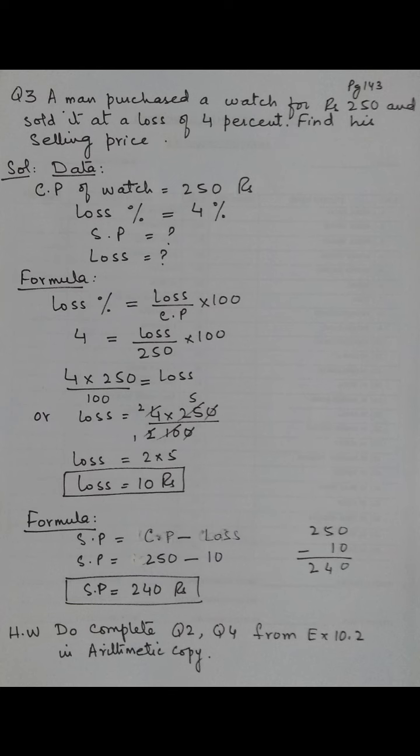The loss percentage is given to us. We apply the formula for loss percent. 4% is equal to loss upon CP. The CP value of 250 is given, so we put it in. Multiply by 100. By cross multiplication, 4 multiply by 250 divided by 100 is equal to loss.